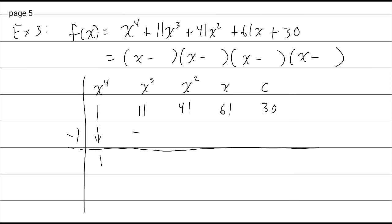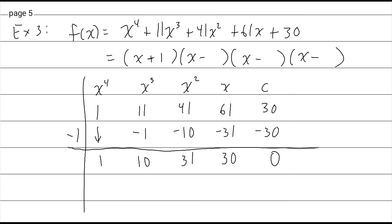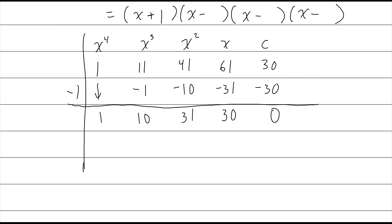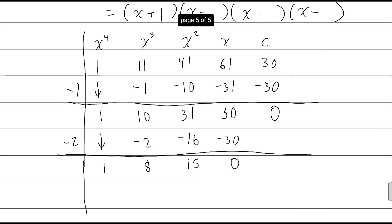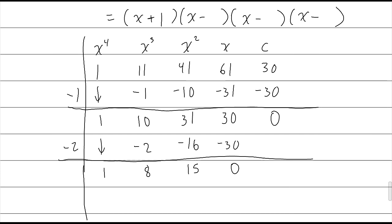Negative 1: bring down the 1; negative 1 times 1 is negative 1; 11 minus 1 is 10; times negative 1 is negative 10; 41 minus 10 is 31; times negative 1 is negative 31; 61 minus 31 is 30; negative 1 times 30 is negative 30; 30 minus 30 is zero. Negative 1 works — plug it in, giving us x plus 1. Now let's try negative 2. Bring down the 1; times negative 2 is negative 2; 10 minus 2 is 8; times negative 2 is negative 16; 31 minus 16 is 15; times negative 2 is negative 30; 30 minus 30 is zero. Negative 2 works, giving us x plus 2.